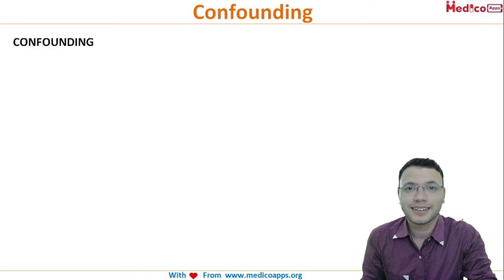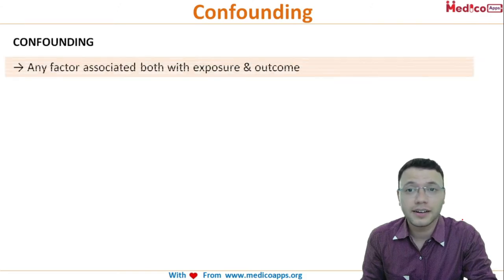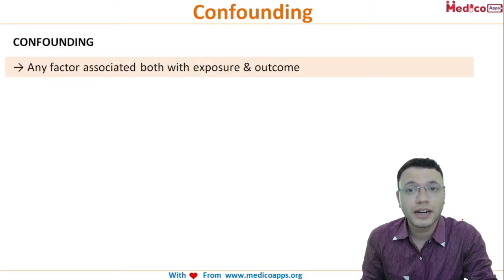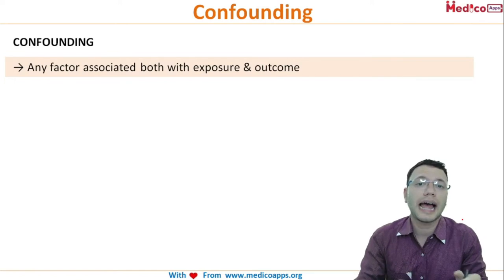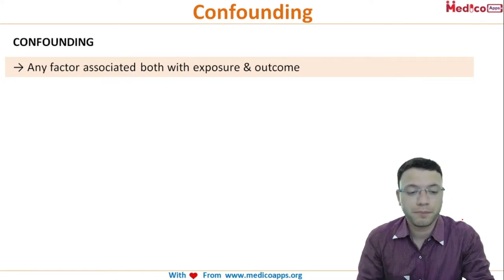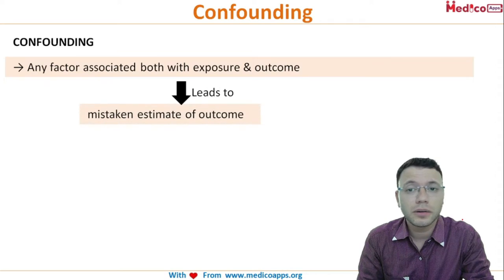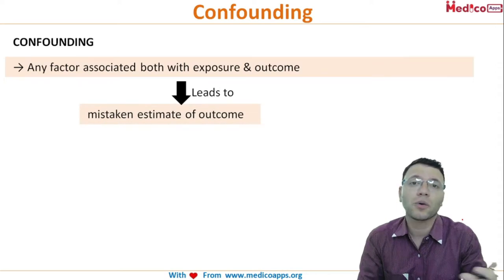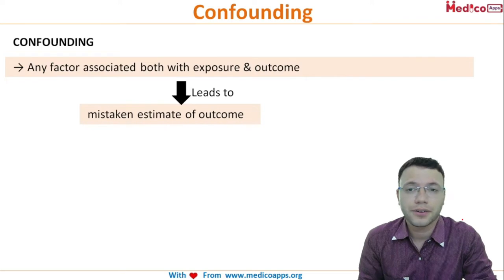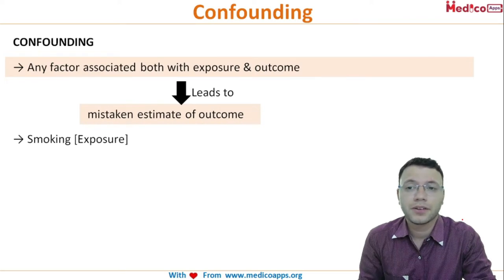A confounding factor is associated with both the exposure and the outcome. When that is the case, it leads to a mistaken estimate of the outcome — the result itself will contain error.